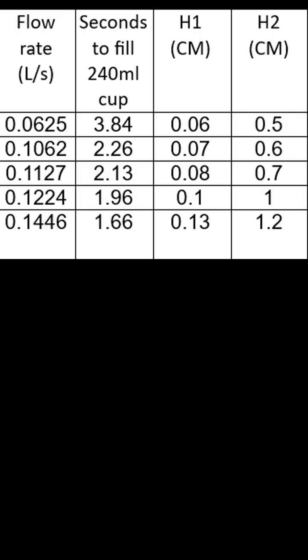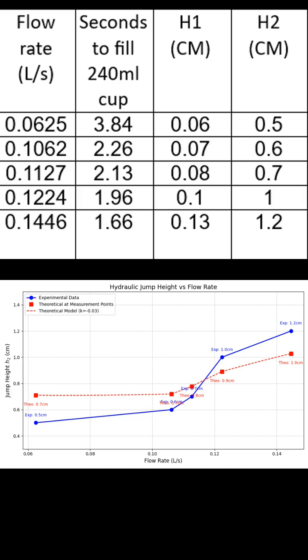The results weren't a perfect match. In some cases, the measured jump was higher or lower than the theoretical prediction. This suggests that there are factors we didn't fully account for in the analysis, such as three-dimensional flow effects, energy losses due to turbulence, surface tension, or small measurement errors.